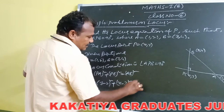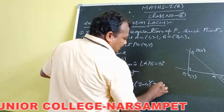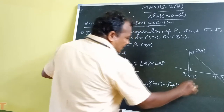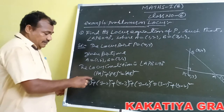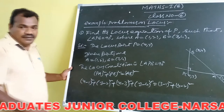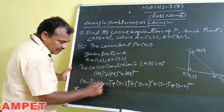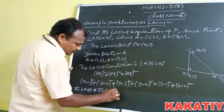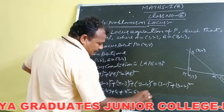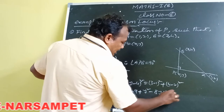Similarly, PB² is (x minus 3)² plus (y minus 4)², and this is equal to AB². Now AB² is (3 minus 1)² plus (4 minus 2)². Expanding the left side: x² minus 2x plus 1 plus y² minus 4y plus 4, plus x² minus 6x plus 9, plus y² minus 8y plus 16.